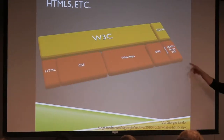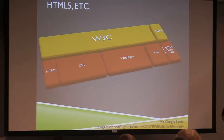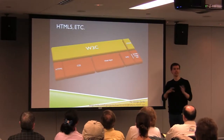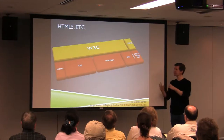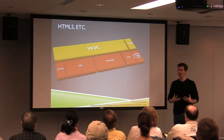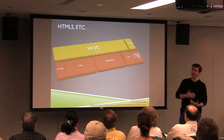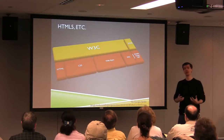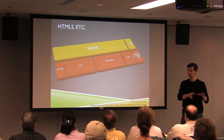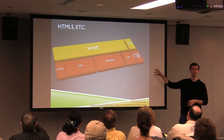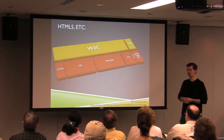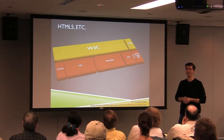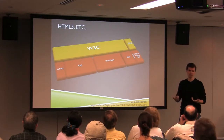These bodies work with a lot of companies and organizations on evolving the standards in a bunch of different areas. Chief amongst them are HTML itself, Cascading Style Sheets for applying and improving look and feel of your content, web apps for doing more on the client side, SVG which is Scalable Vector Graphics, geolocation, and finally JavaScript, which is the ECMAScript 5 specification.